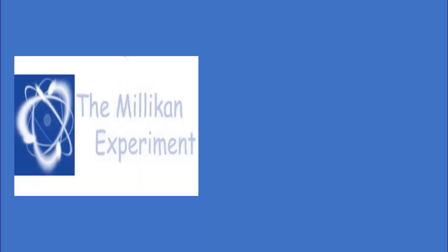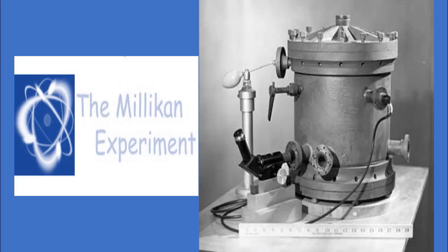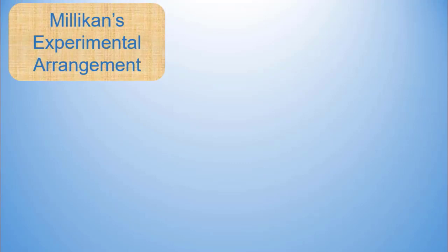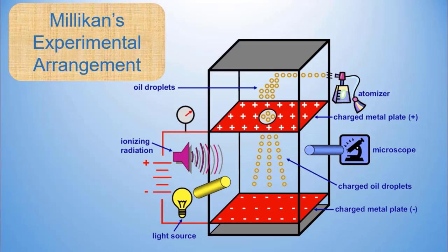We will be discussing Millikan's experiment for the determination of charge on an electron. The experimental arrangement of Millikan's oil drop method has been shown through this figure. In year 1909, Millikan devised a technique through which he calculated the charge on an electron. Soon after the discovery of electron, scientists tried to measure its charge and mass. Many successful attempts were made in this regard.